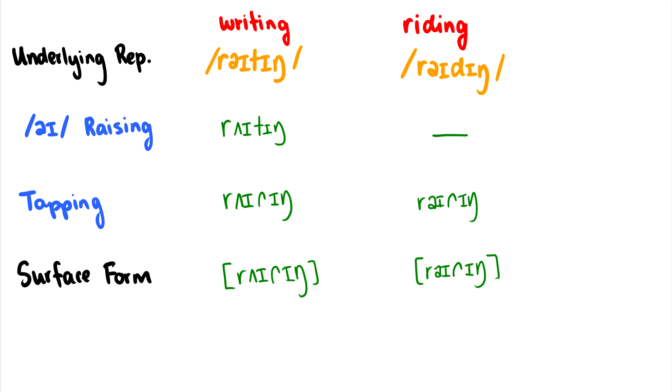You won't hear the difference between writing and riding like us Canadian speakers say. They would both just be pronounced as writing and riding. I am writing a paper, I am riding a bike. I would say something like I'm writing a paper, I'm riding a bike. So different. And if we do eye raising before tapping, we get the predicted results, or at least we get results that are consistent with the way that I speak.